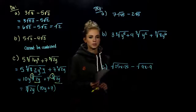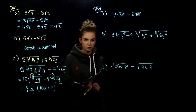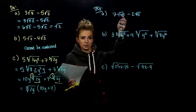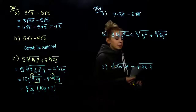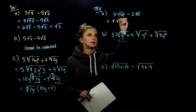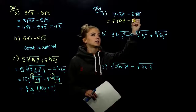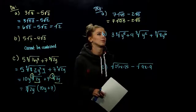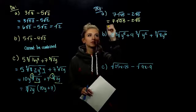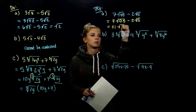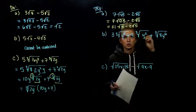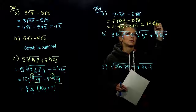Simplify 7 root 45 minus 2 root 5. For 45, break it into the largest perfect square and something else — a hint is what's hanging over on the other term. We can break 45 into 9 and 5. Evaluating out of the radical gives 3; 7 times 3 is 21. Now we have like terms with root 5: 21 minus 2 gives us 19 factors of root 5.